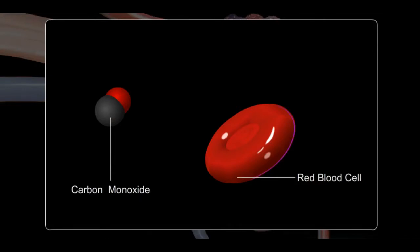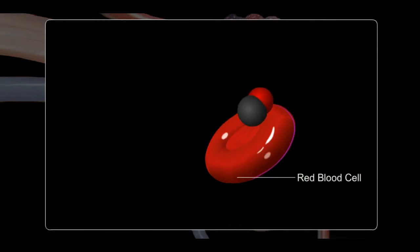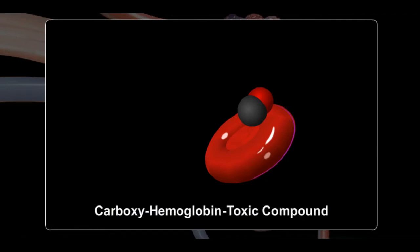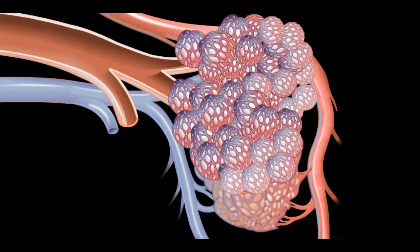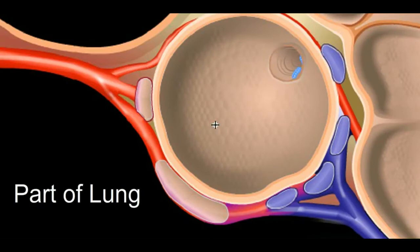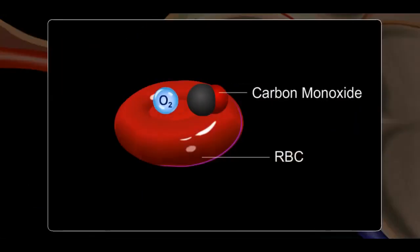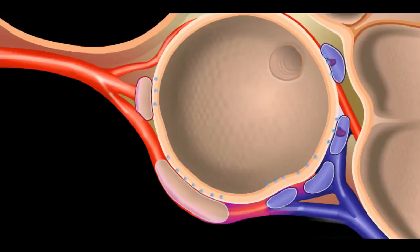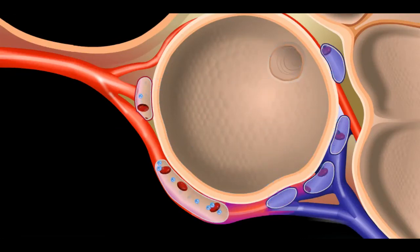Carbon monoxide poisoning occurs when carbon monoxide attaches itself to hemoglobin, an oxygen-carrying protein in the blood. This results in formation of a toxic compound called carboxyhemoglobin. Hyperbaric therapy makes the blood oxygen rich by dissolving an increased amount of oxygen in the blood. This action breaks the bond between the hemoglobin and carbon monoxide. Carbon monoxide is then eliminated from the body rapidly through the lungs during breathing.